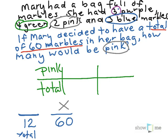So the first part of my proportion would be what Mary has. Mary has two pink out of twelve total in her bag.